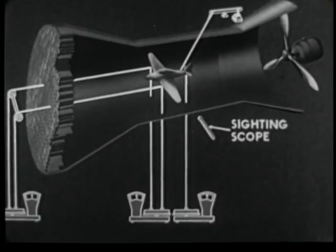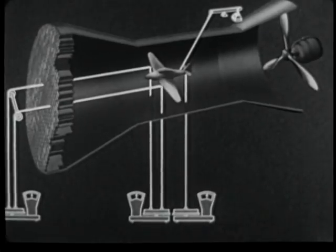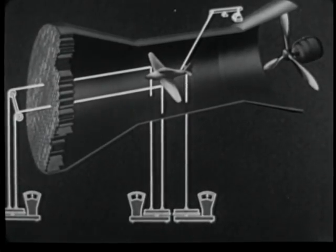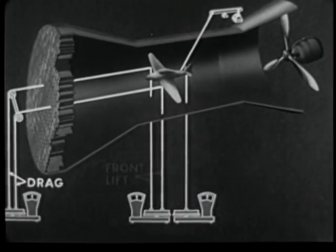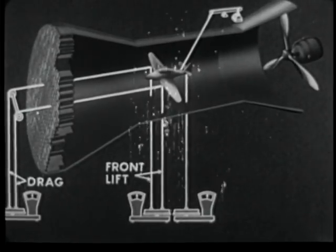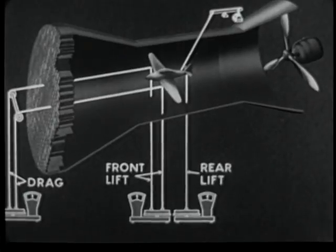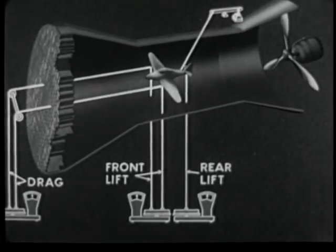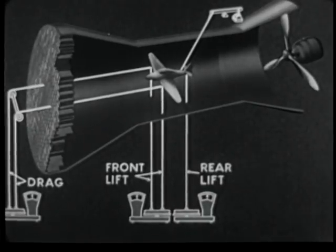The position of the model is observed through sighting scopes. With the air flowing at the desired velocity, drag force is exerted upon these wires. Front lift is measured as the actual lifting force upon these wires. Rear lift as the force upon this wire. Total lift is the sum of front and rear lift.